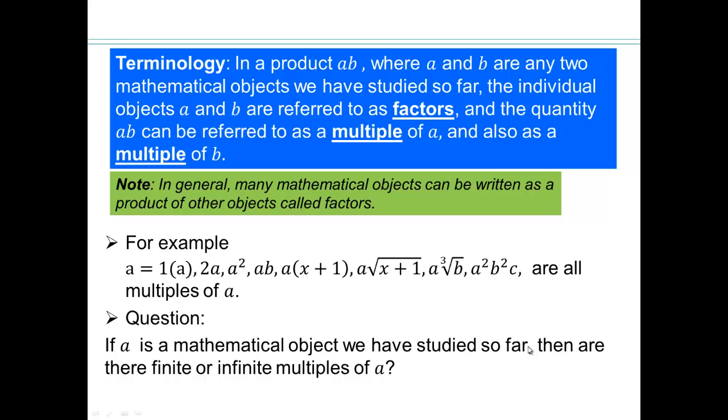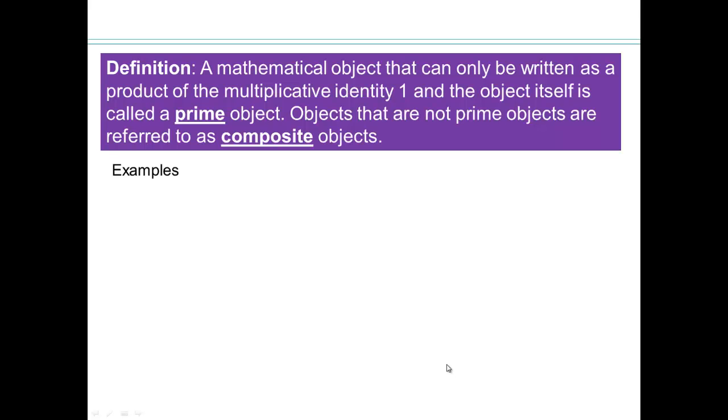So here's a question for you. If A is a mathematical object we've studied so far, then are there finite or are there infinite multiples of A? So think like 2 for example. I have 2 is a multiple of 2, 4 is a multiple of 2, 6 is a multiple of 2, 8 is a multiple of 2. So can you answer that question? Do you think there are finite or infinitely many multiples of an object? Well, good. Yes, there are infinitely many.